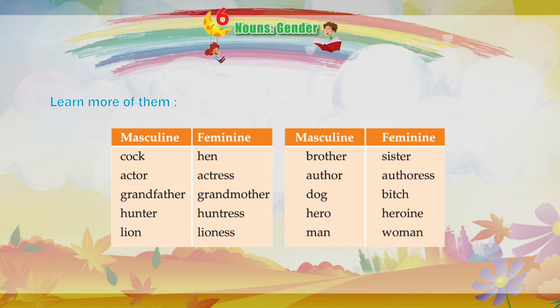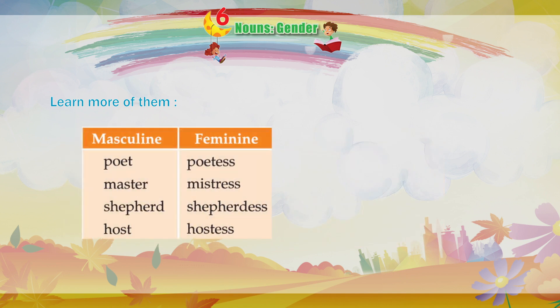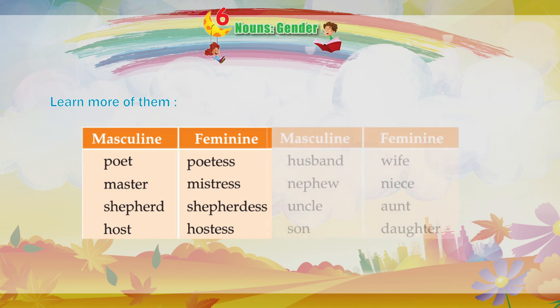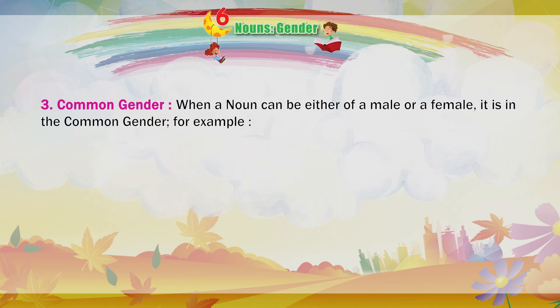Hero – Heroine. Man – Woman. Poet – Poetess. Master – Mistress. Shepherd – Shepherdess. Host – Hostess. Husband – Wife. Nephew – Niece. Uncle – Aunt. Son – Daughter.